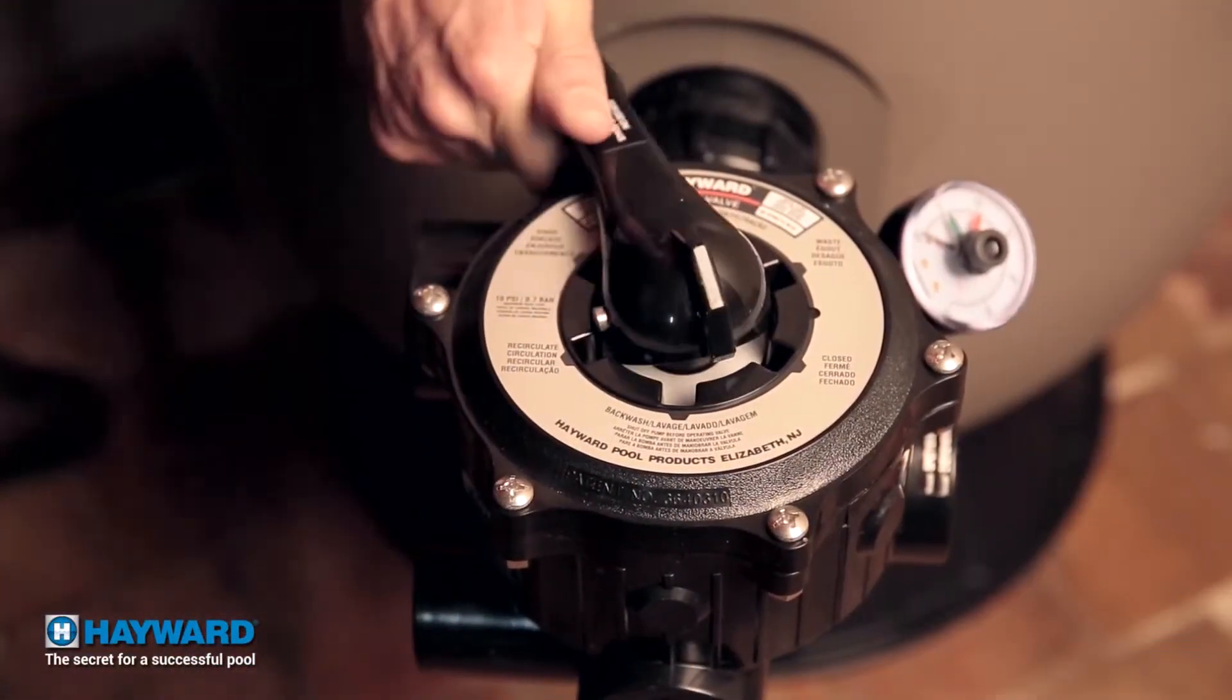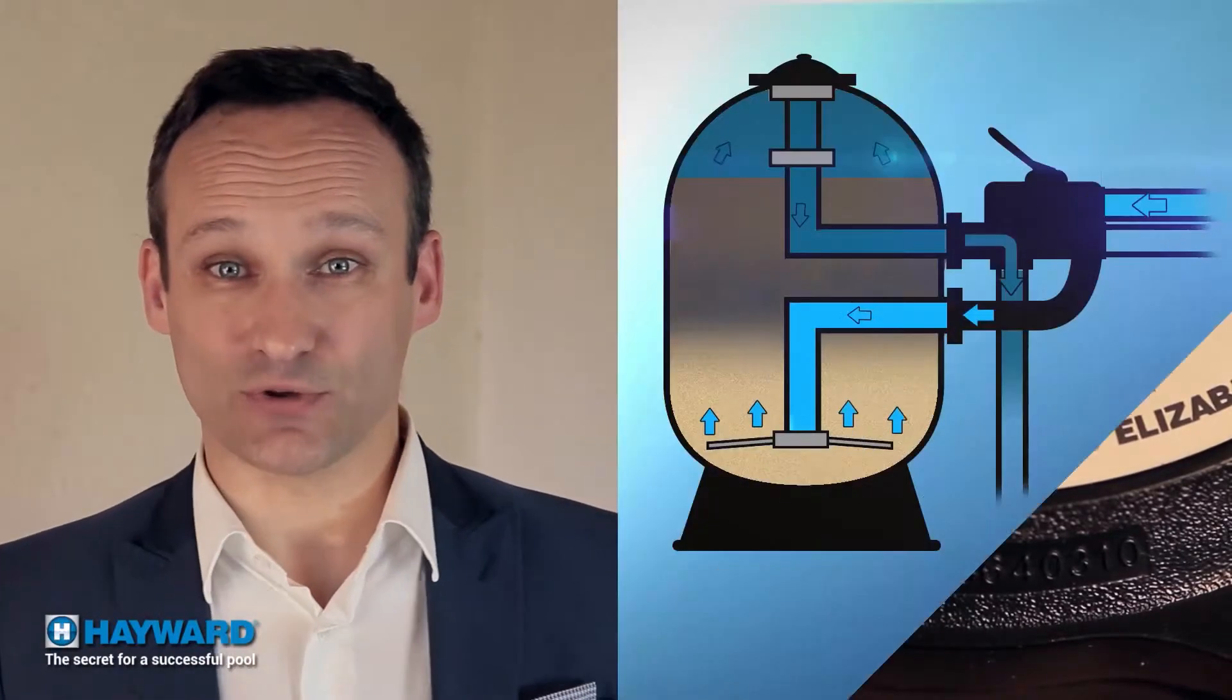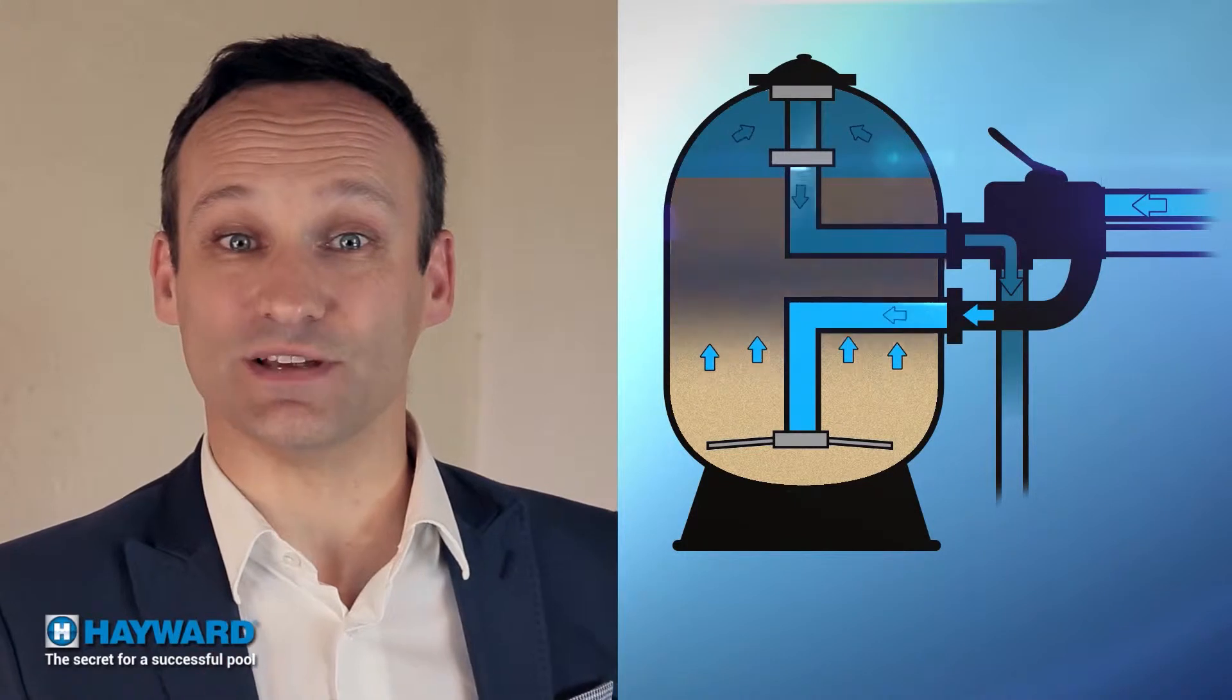Backwash position. The water comes from the pool, flows backwards through the filter, and goes to the drains.